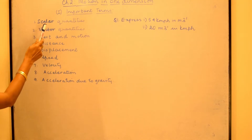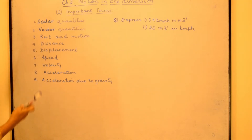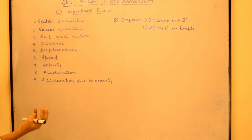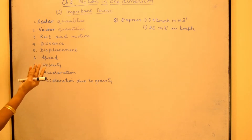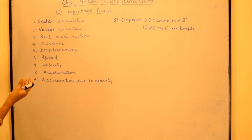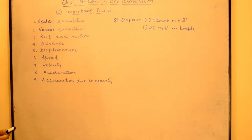So scalar quantities would include mass, distance, and speed. All these quantities will be our scalar quantities.